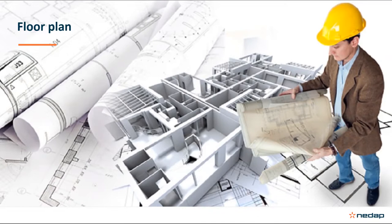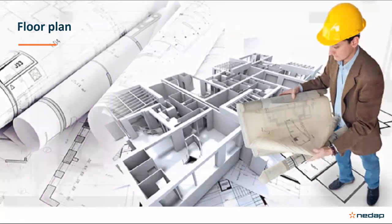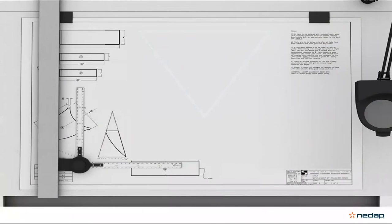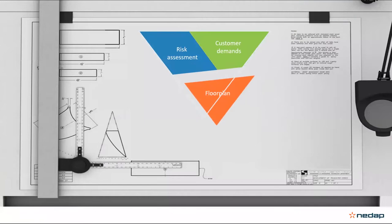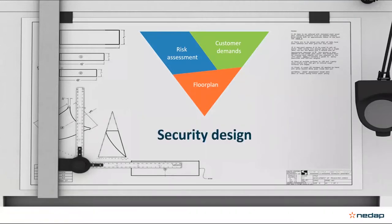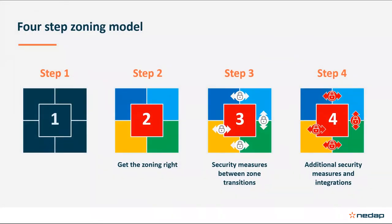A good physical building layout can help mitigate against potential terrorist or outsider threats. So these are our inputs: our risk assessment, our customer demands, and our floor plan. You can use this input to come up with a security design which meets the demands and requirements of your customer. Based on this input, we can introduce you to our zoning model, which we split into four simple steps.